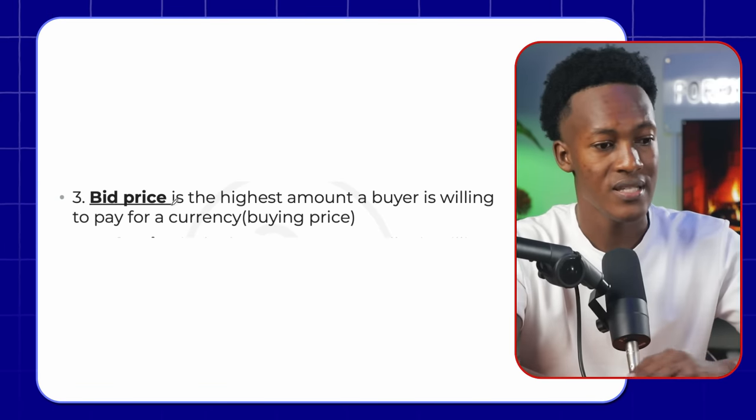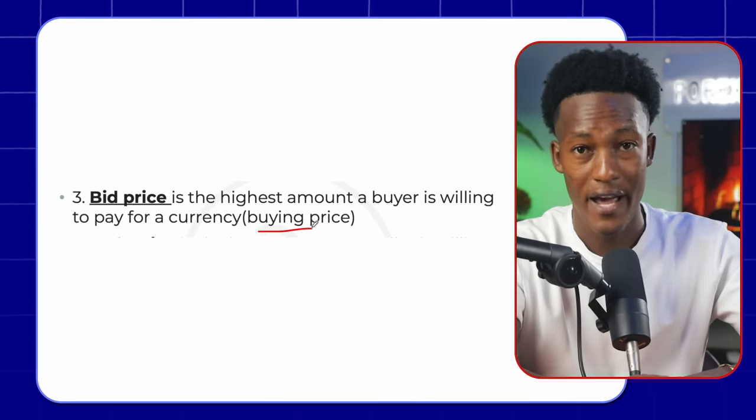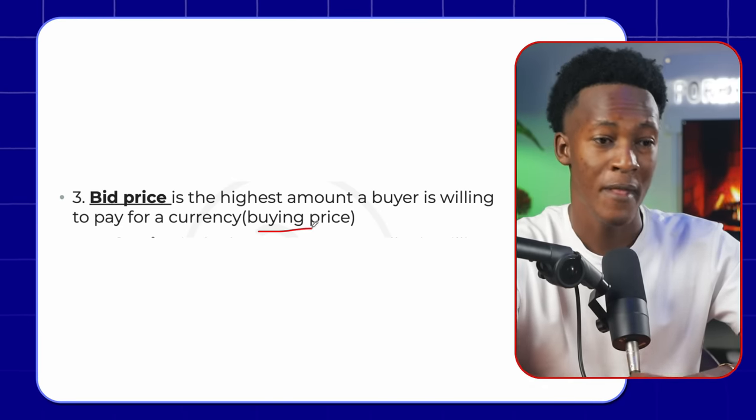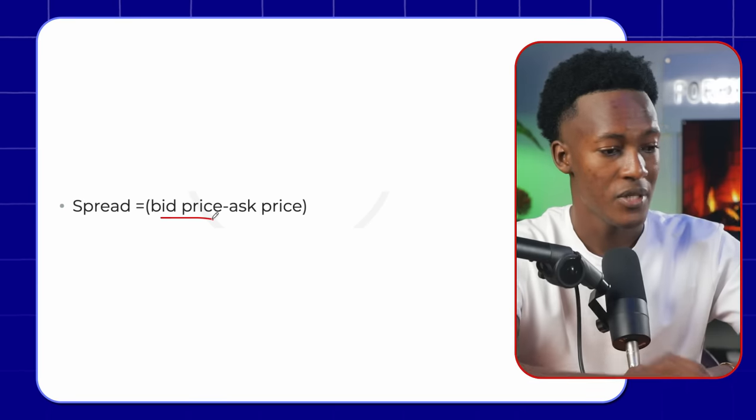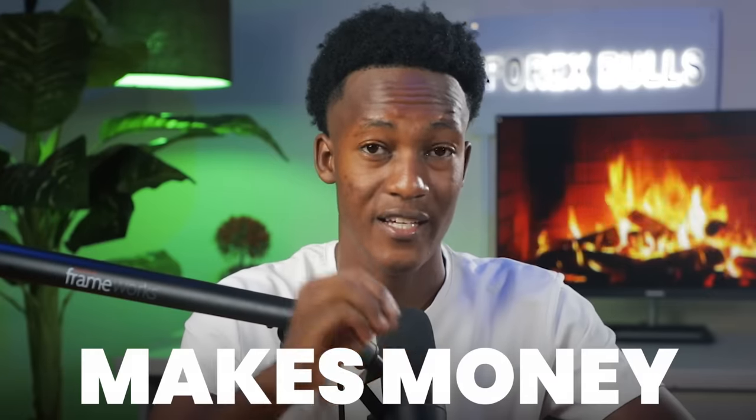The next keyword is bid price — the highest amount a buyer is willing to pay for a currency, also called the buying price. There's always a buying price and a selling price. The ask price is also called the selling price. We also have a spread, which is just the difference between the bid price and the ask price — this is where the broker makes money, regardless of whether you take a loss or a profit. It's important to choose a broker with tighter spreads. If spreads are too big, the broker is making way too much money from you. Find a broker with tighter spreads that are favorable to you as the trader.